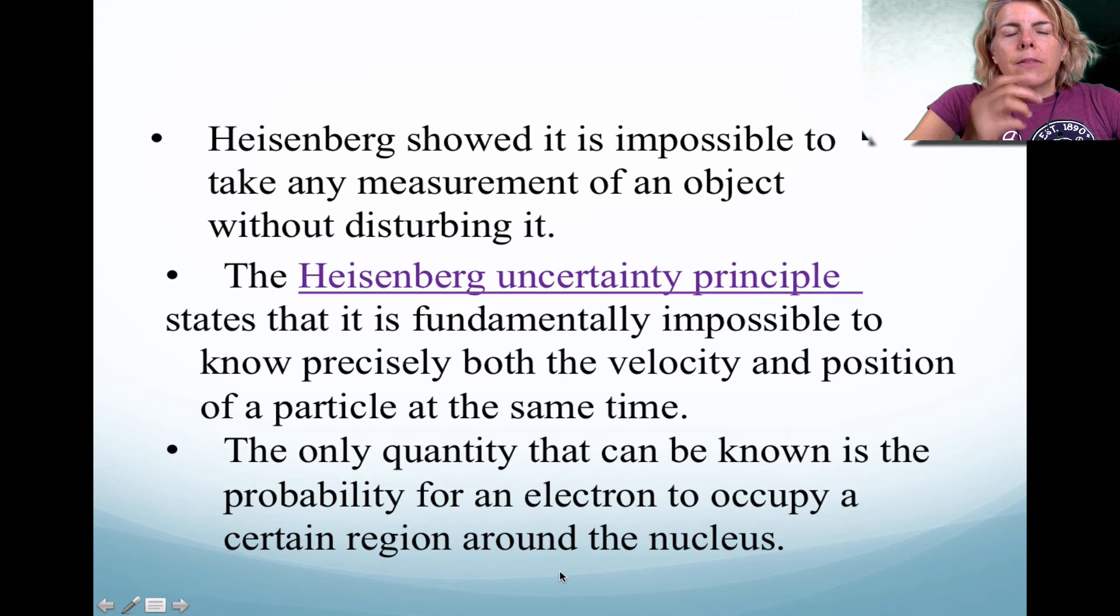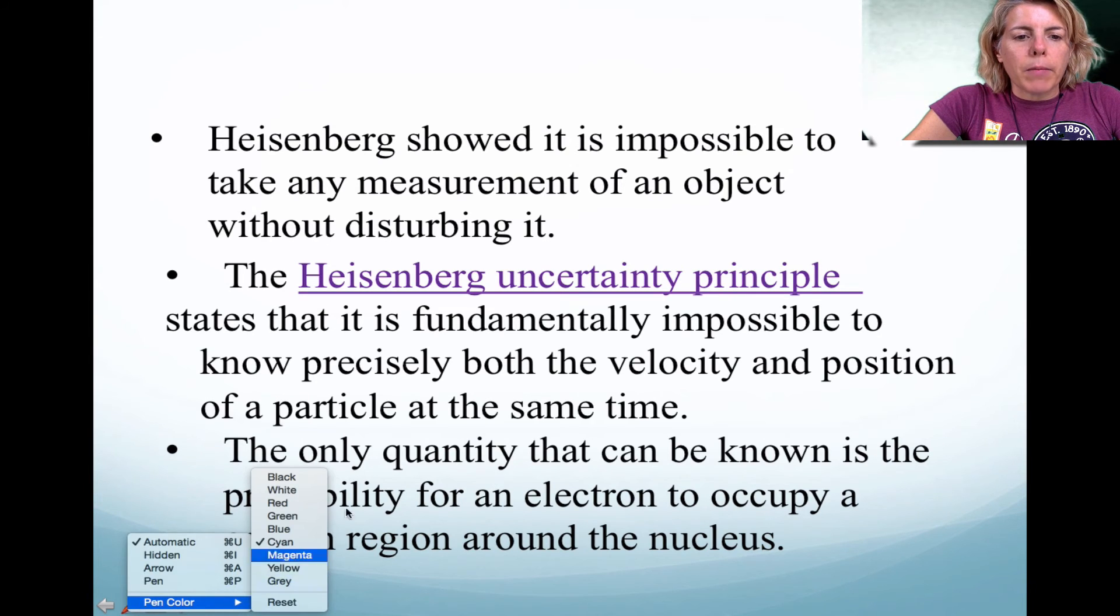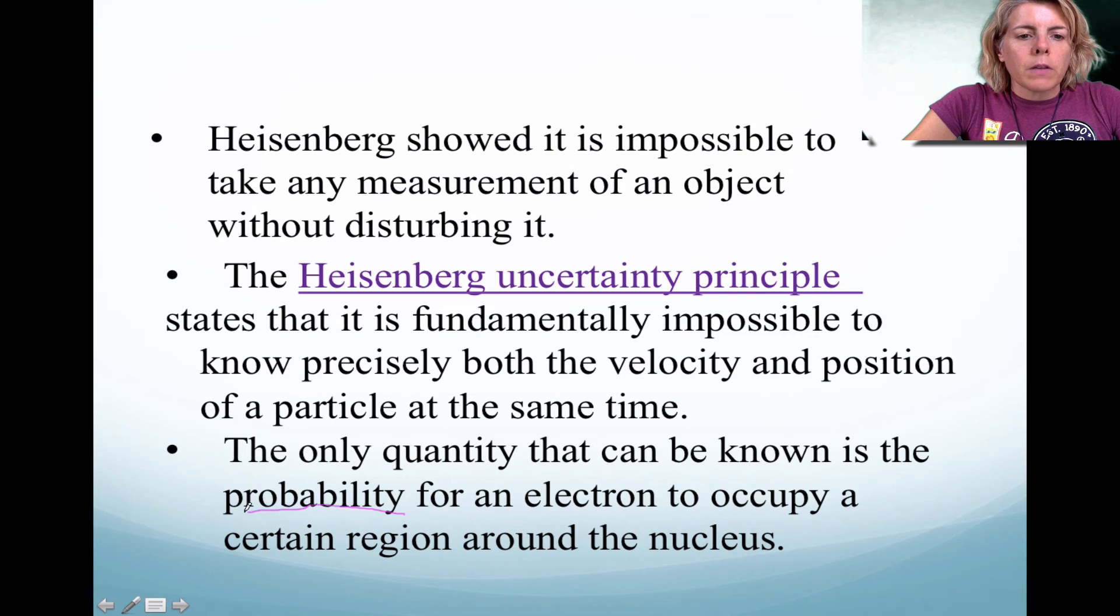So what does this mean? This means that electrons actually occupy what we call a probability region. So it's just like the lottery. You're taking a chance. There's a probability that you might win. Well, with an electron, there's a probability that the electron's going to occupy that specific space.